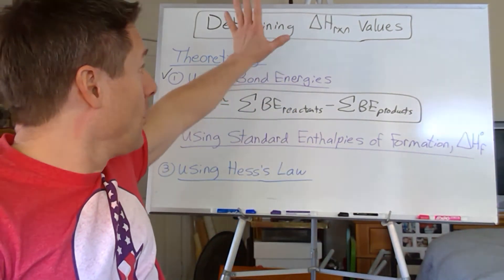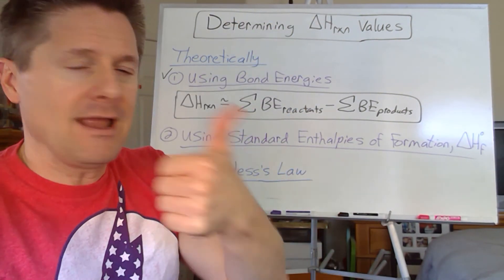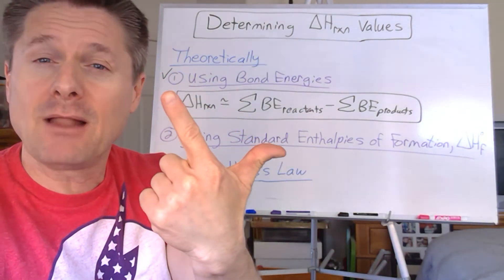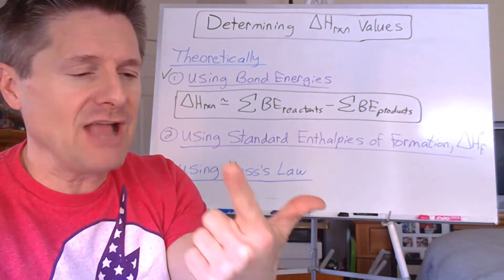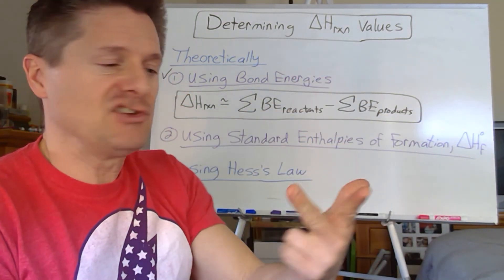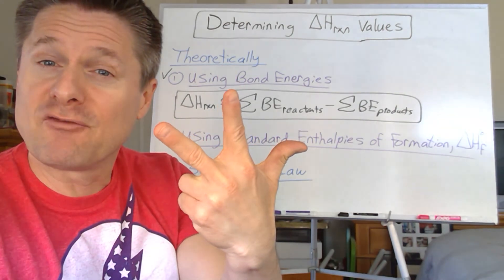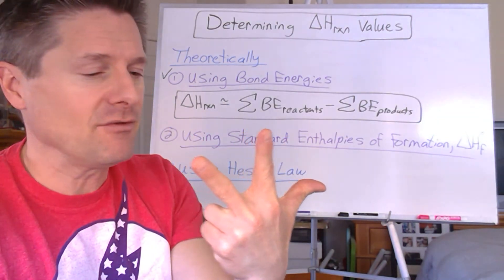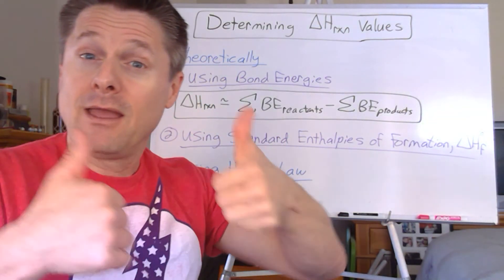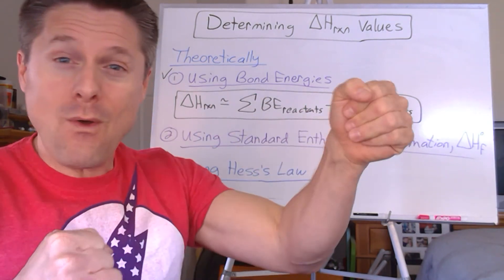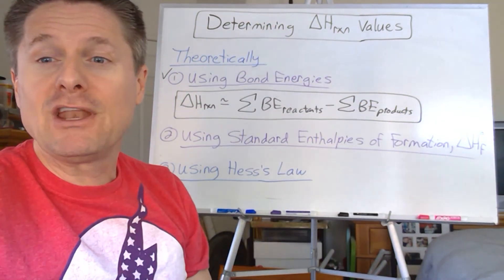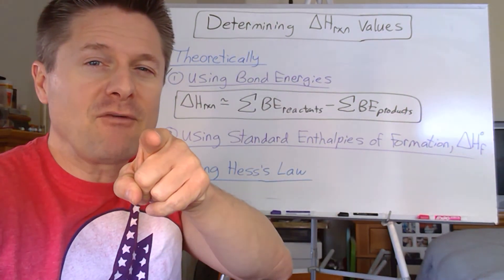So we'll go through those five things: bomb calorimeters, coffee cup calorimeters - experimentally measuring heats of reaction - already covered bond energies, then we'll look at standard enthalpies of formation and how we can calculate delta H from that, and then Hess's Law, and we're done with this chapter. Just a quick little intro video for you. We'll see you in a little bit for bomb calorimeters.